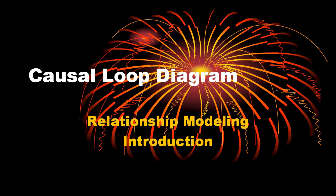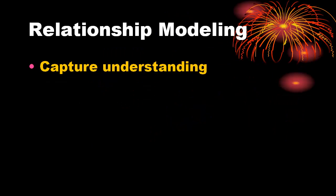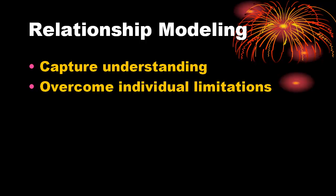Causal loop diagrams are used to create a visual relationship model. As we investigate the network of interactions associated with a situation, we need a way to capture understanding as it develops. We are only capable of holding a few relationships in our mind at the same time. A visual representation proves quite beneficial in dealing with this limitation.